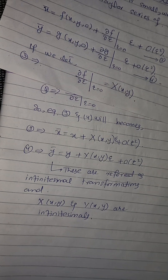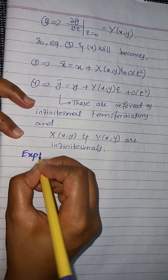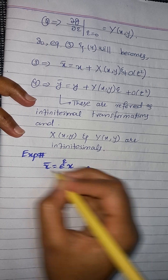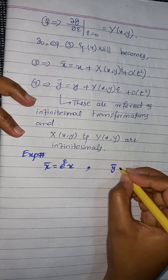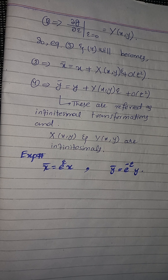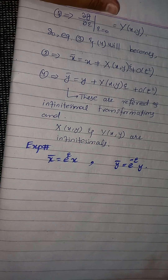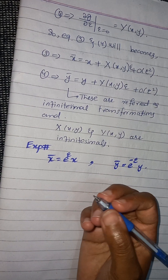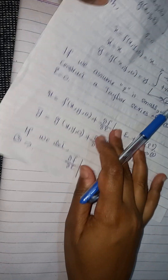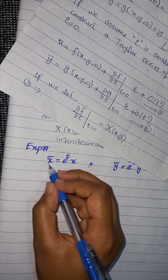Let us consider an example and see how we can determine the infinitesimals. Consider a Lie group — you can check the properties of a Lie group, and if you don't know what a Lie group is or how to check its properties, you can search my previous videos where it is explained in detail. We are asked to find the infinitesimal transformations, capital X and capital Y.